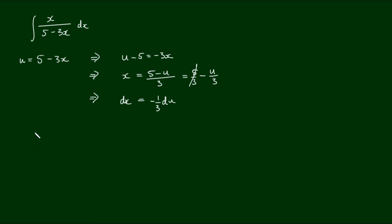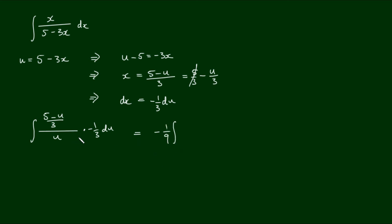So we can now make all of the substitutions. The integral becomes: 5 minus 3x on the bottom is substituted for u, the x on the top is substituted for 5 minus u over 3, and dx is substituted for negative one third du. Let's rewrite this as negative 1 over 9 by the integral of 5 minus u all over u du. And we can further simplify that to minus 1 over 9 times the integral of 5 over u minus u over u du.